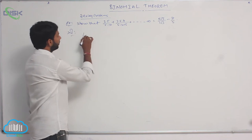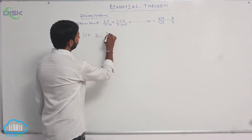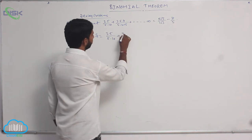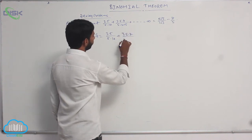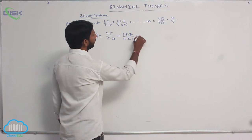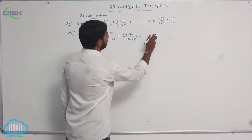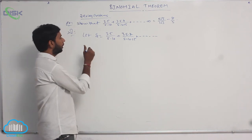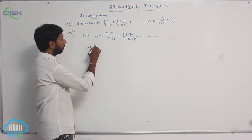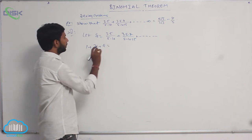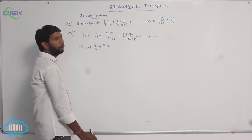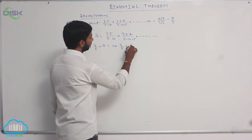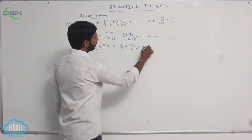Let us consider the series S = 3·5/(5·10) + 3·5·7/(5·10·15) + ... and so on. But the series must contain a single term 3/5, so adding 1 + 3/5 on both sides: 1 + 3/5 + S = 1 + 3/5 + 3·5/(5·10) + ... and so on.